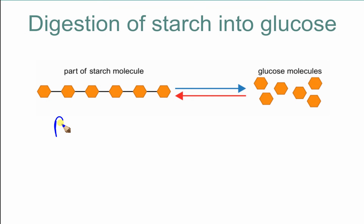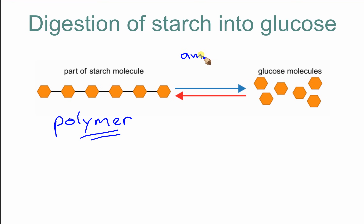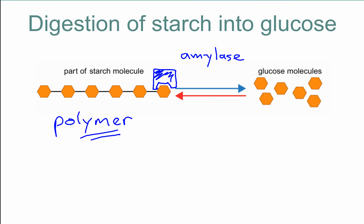Starch is known as a polymer, and polymers are very long molecules — this is only part of a starch molecule, which would be stretching on and on. The enzyme amylase has an active site which perfectly fits this particular substrate, so starch is the substrate and amylase is the enzyme. The amylase can break down the starch molecule into these smaller glucose molecules.